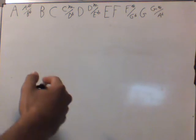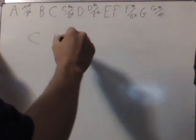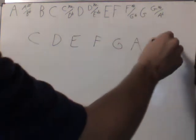So let's take a look at the C major scale: C, D, E, F, G, A, and B. And then we go back to C.